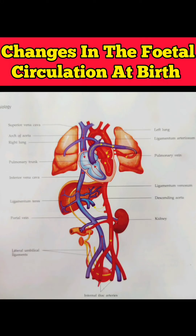The anatomical closure from fibrosis takes 2-3 months and it forms ligamentum arteriosum in adults. Third, closure of the umbilical arteries. There is immediate functional closure to prevent any fetal blood loss. Umbilical arteries undergo atrophy and obliteration within 3-4 days after birth. The proximal parts of umbilical arteries remain open as superior vesical arteries, while the distal parts become the lateral umbilical ligaments.